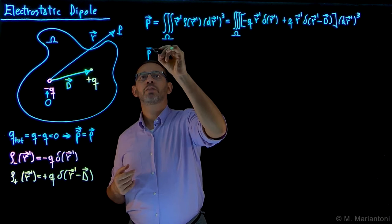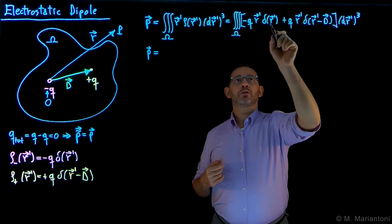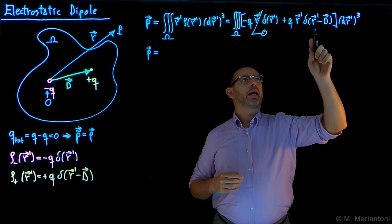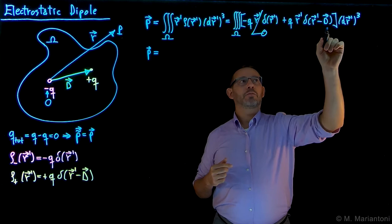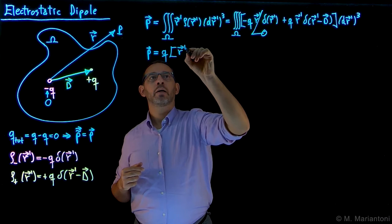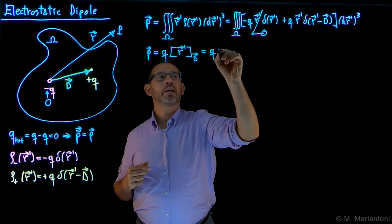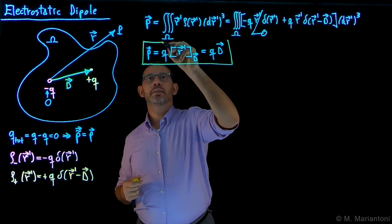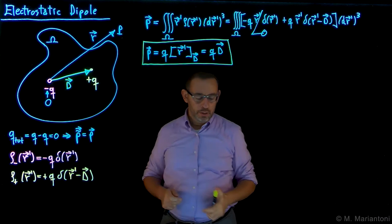Using the properties of the Dirac delta — the weighting function is evaluated at the center of the delta — the first term, centered at zero, contributes zero. The second delta is offset by capital D, so we evaluate r-prime at capital D, and the result is plus q times D. Therefore, the dipole moment of an electrostatic dipole P is given by the charge q times the vector D, which is the distance vector going from the negative to the positive charge according to this definition.